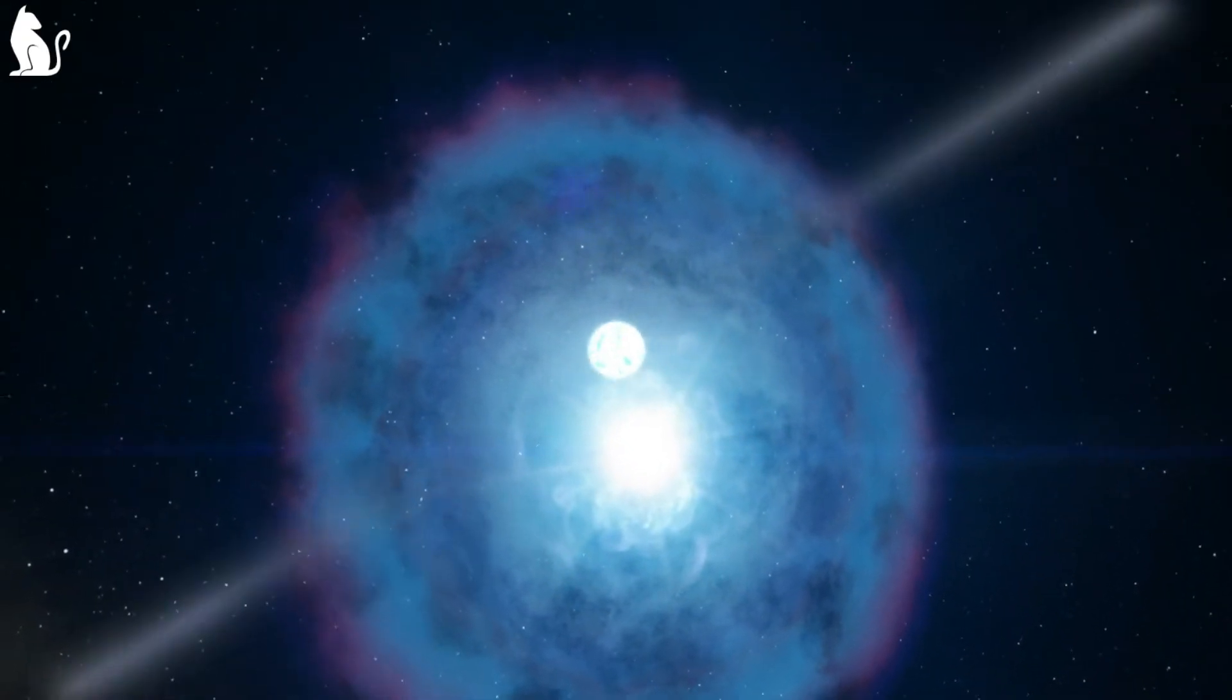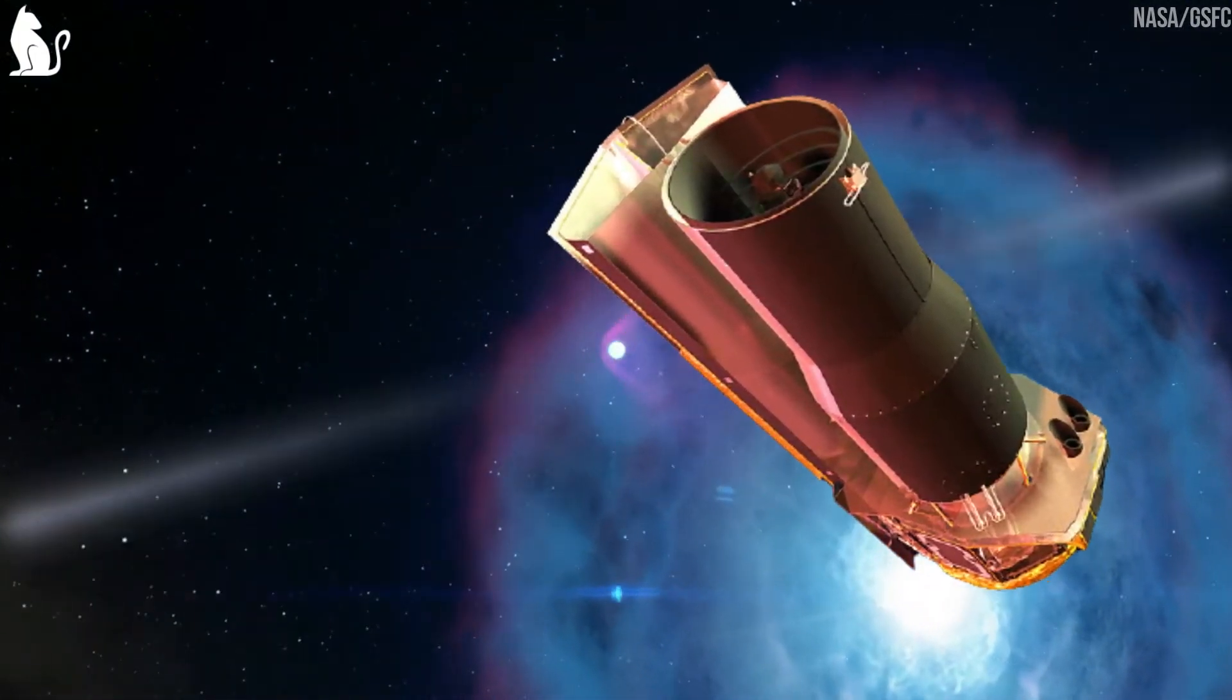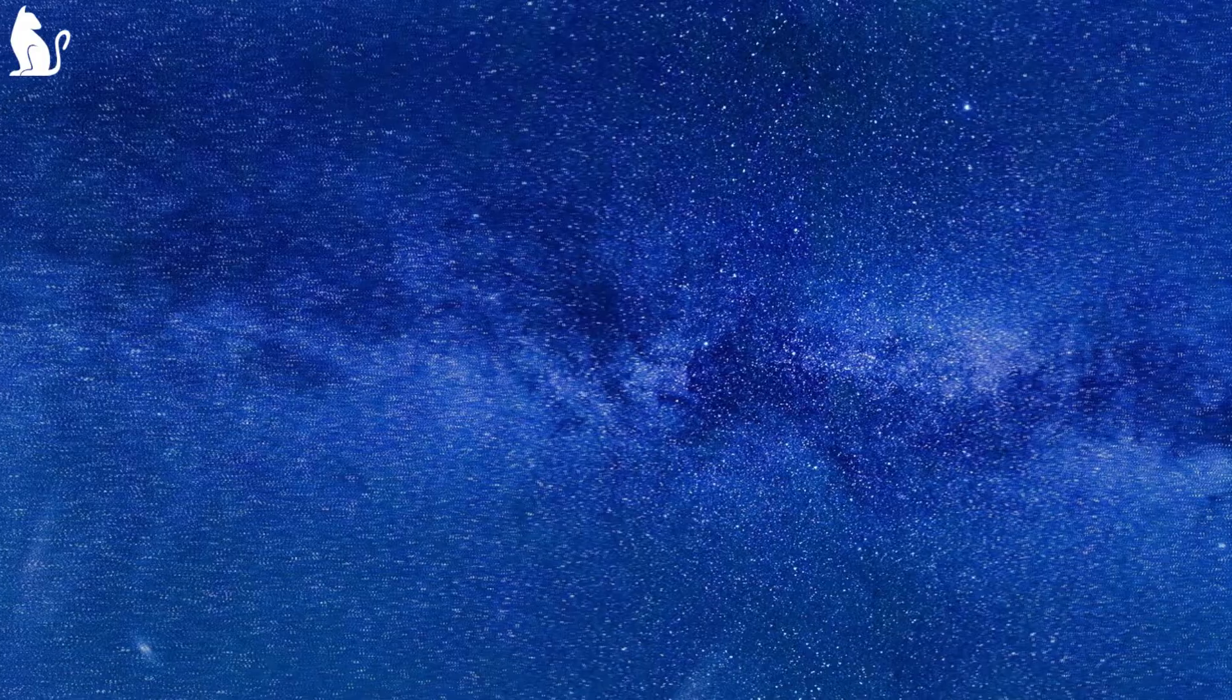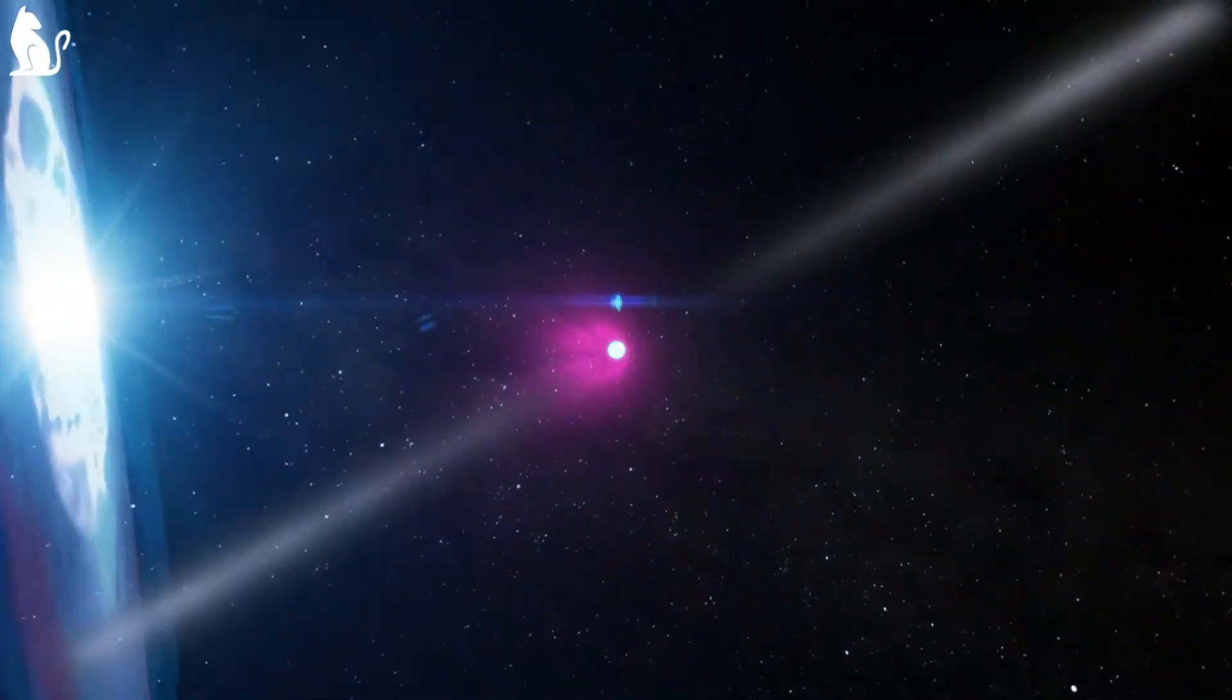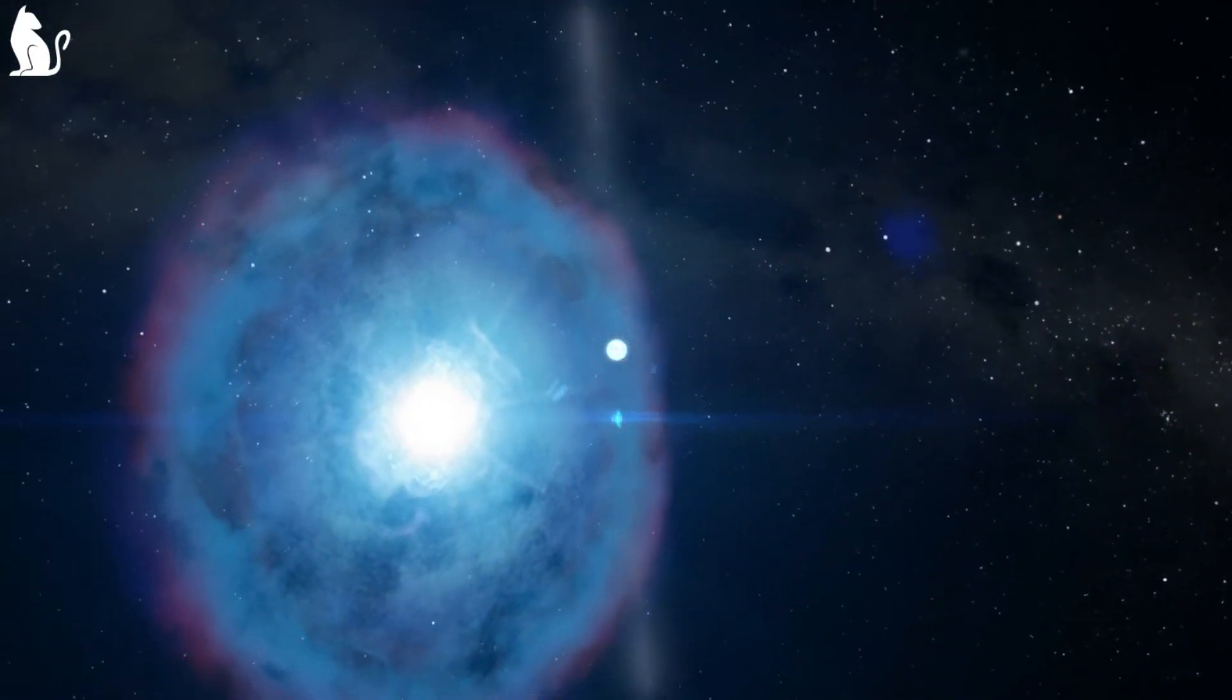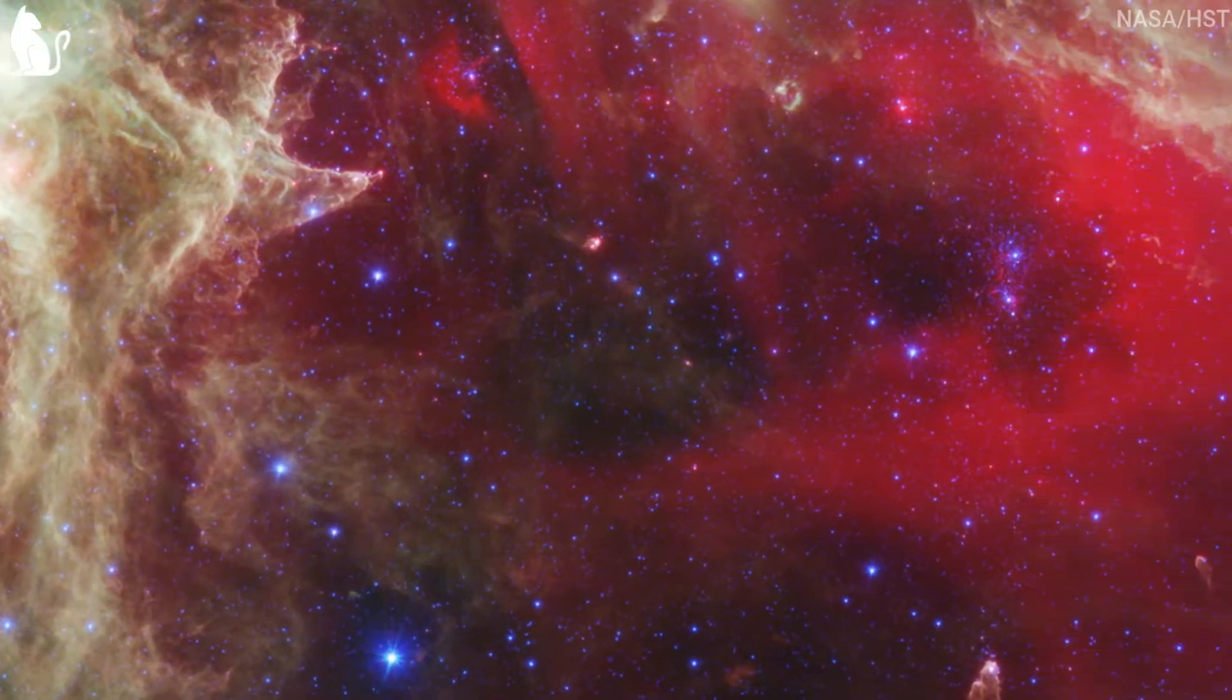To find supernovas in space, scientists used their big eye, the Spitzer telescope. They started to observe 40 different dusty galaxies. Then they found that supernovas are not so rare. They occur as frequently as scientists have predicted. Hiding behind the dust clouds, the star's life cycle ends with a bang.